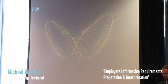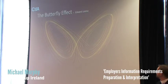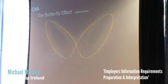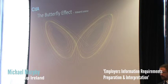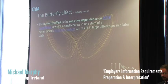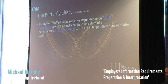Setting the scene. The Chaos Theory is an interesting scientific theory — it basically resides around the butterfly effect. The more we read about it, the more sense it made in relation to the actual construction industry when you have a long, hard look at this. The butterfly effect is the sensitive dependence on initial conditions in which a small change in one state of a deterministic, non-linear system can result in large differences in a later state.